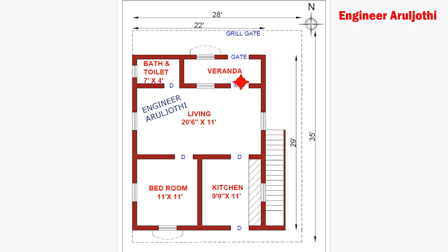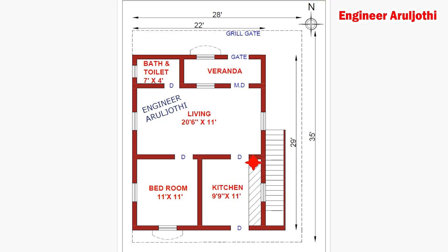This area is the living hall. This area is the kitchen. This area is the living hall. You can see the living hall window — this will be 7ft x 4ft.